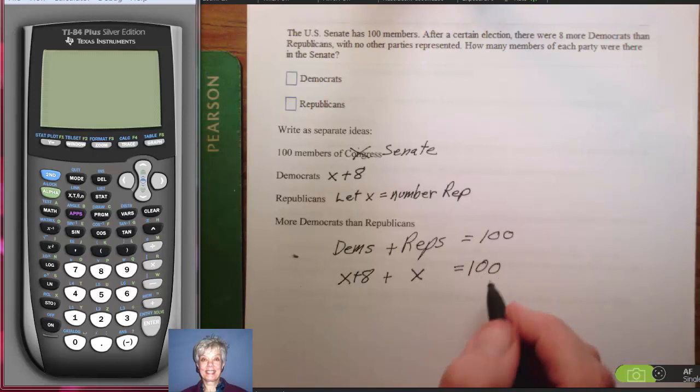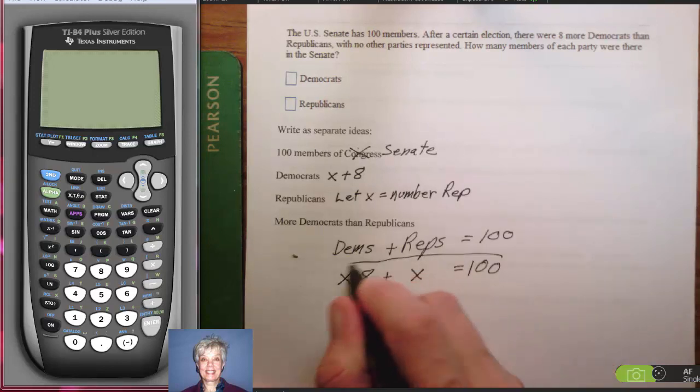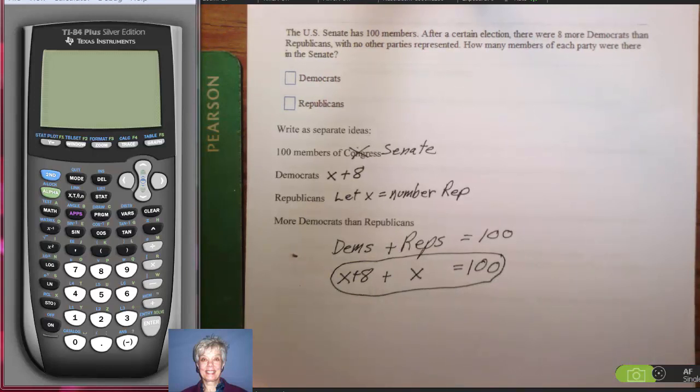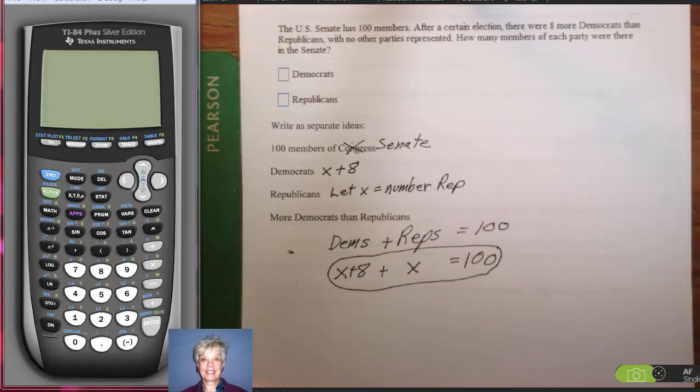Now, all we have to do is solve this equation, which really doesn't look like the hardest equation in the world. And we got this just from breaking the story down into sentence by sentence. What are the main ideas? The main ideas is there are 100 members that are divided up into Republicans and Democrats. How many of each are there?